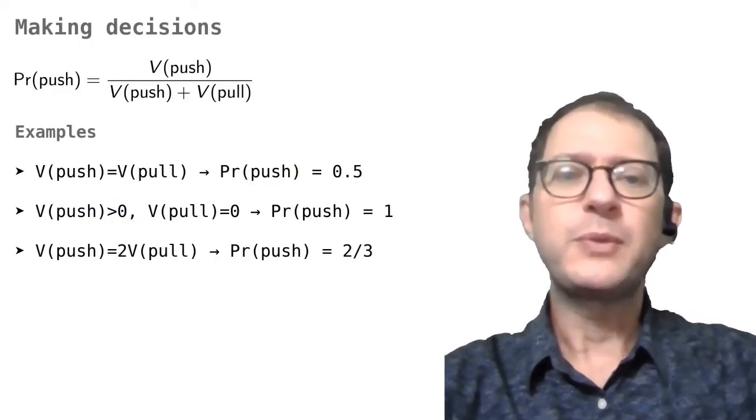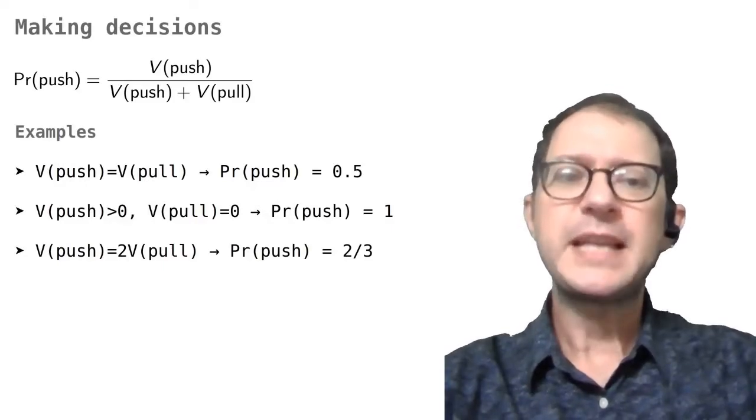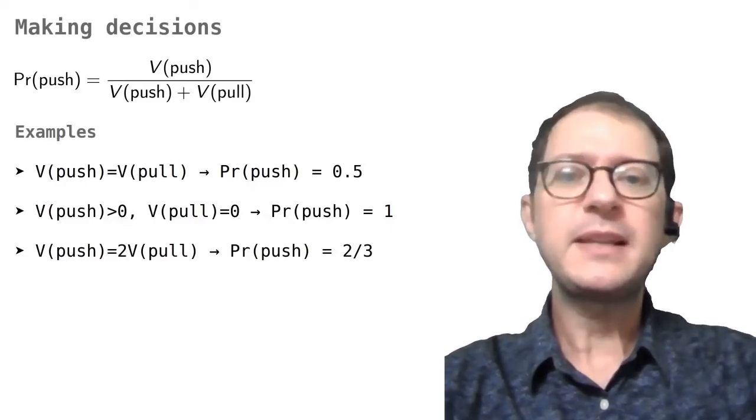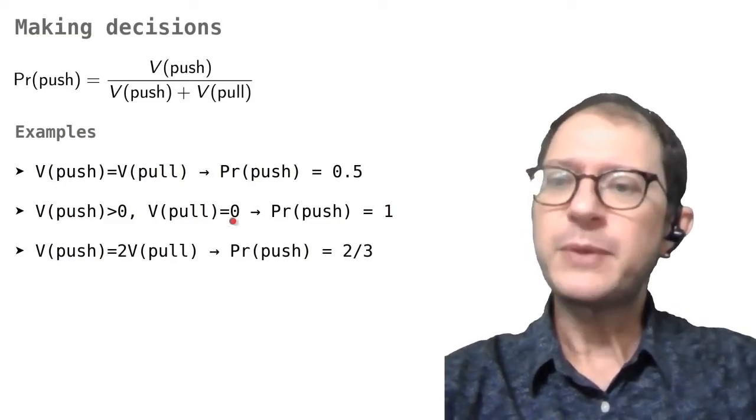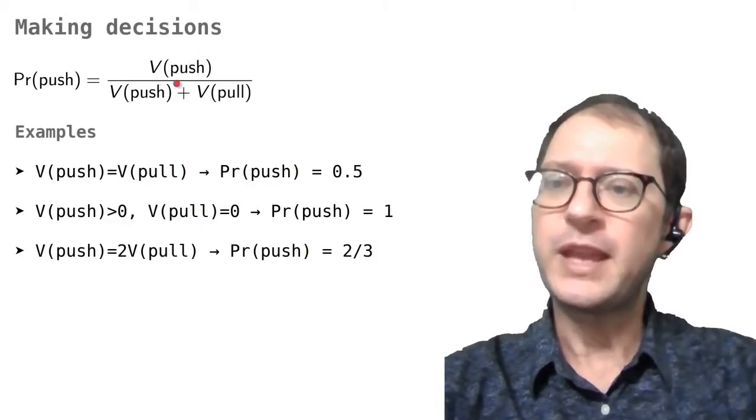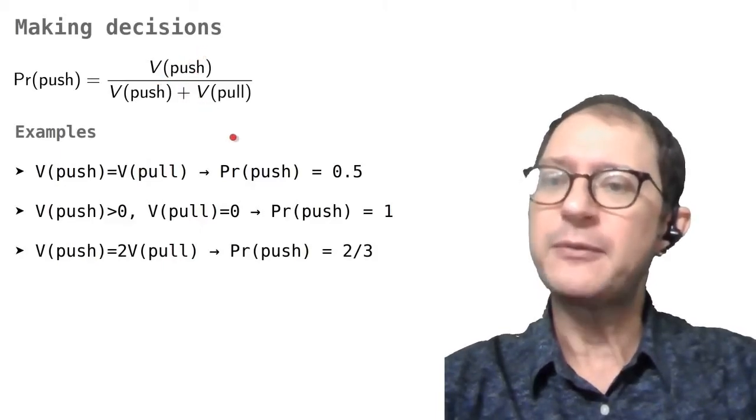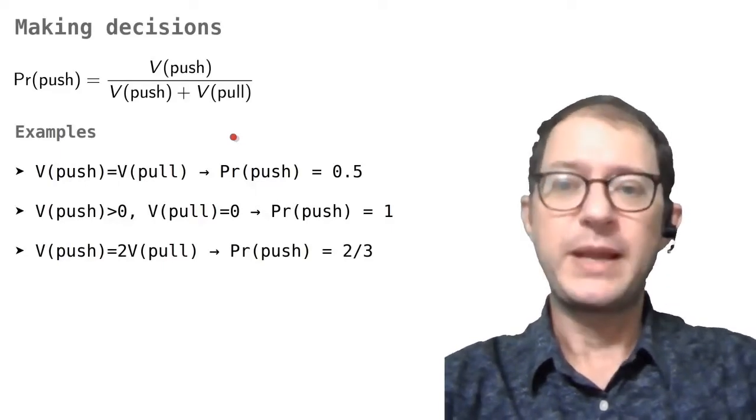When you have a new formula like this one, it's a good idea to check that it makes sense. For example, if the two Vs are the same, exactly the same, there should be no preference for pushing or pulling. In fact, we can check that if you use the same number here for V(push) and V(pull), you get one half. That is a probability of 50% of doing either action. So this worked well.